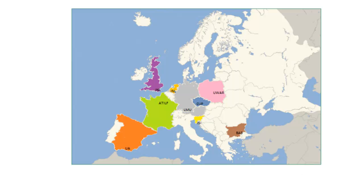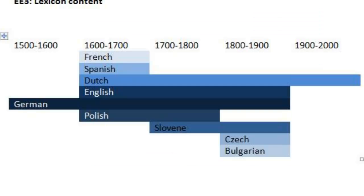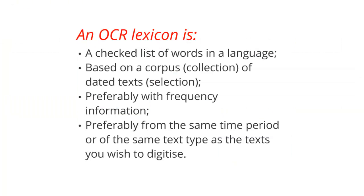These are the European countries for which language resources have been developed during the project for these time periods. There are two main uses for the lexicon within IMPACT: the first is as an optical character recognition or OCR lexicon, and the other is an information retrieval lexicon.